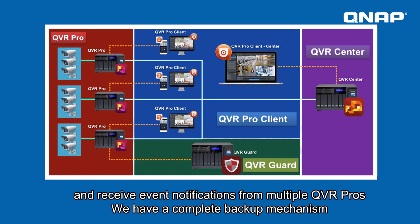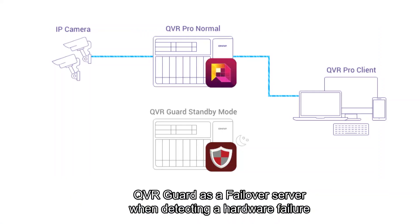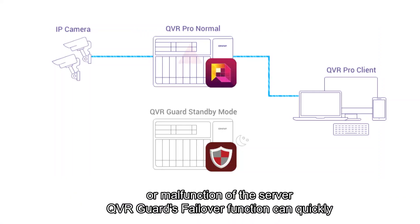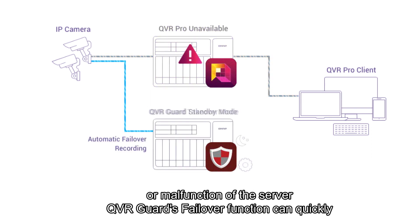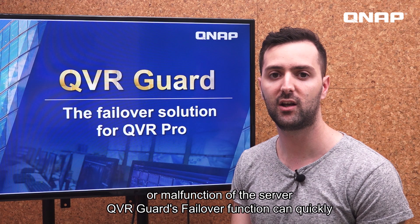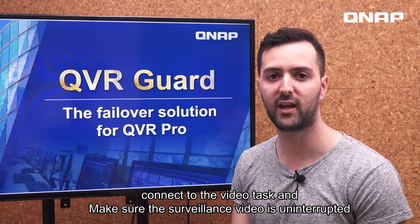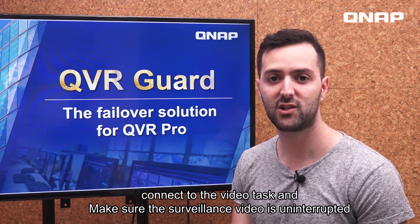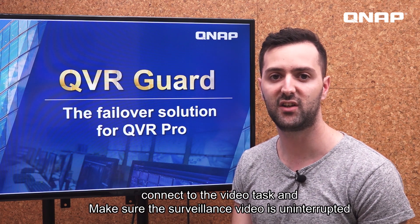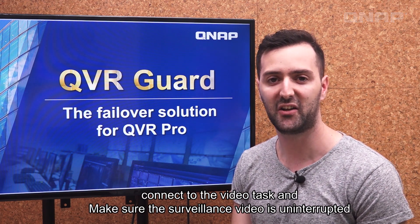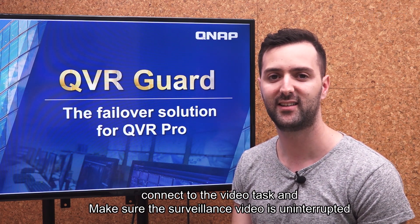We have a complete backup mechanism, QVR Guard, which acts as a failover server when detecting a hardware failure or malfunction of the main server. QVR Guard's failover function can quickly take over the video task and make sure the surveillance video is uninterrupted.